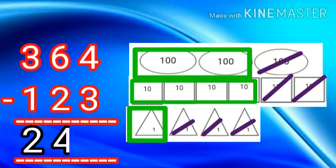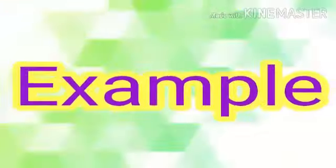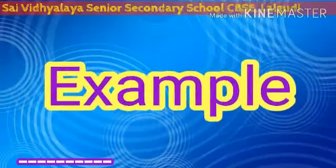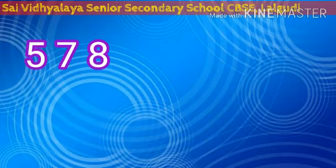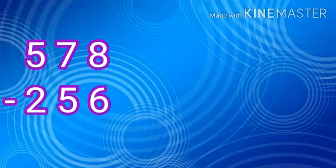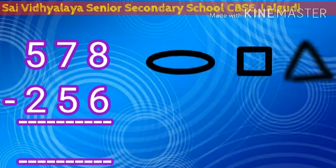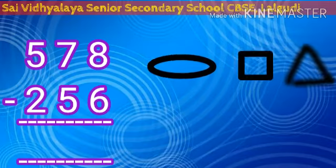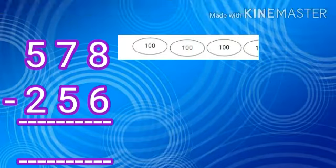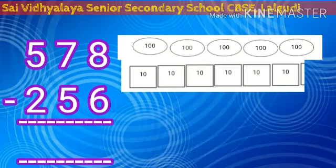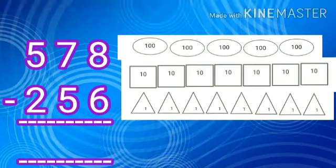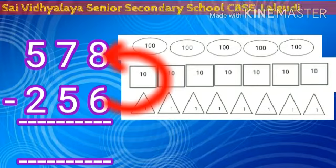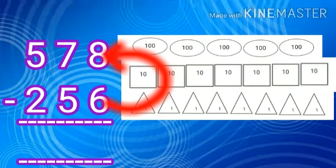Shall we see the next example? We will subtract 256 from 578, that is 578 minus 256. Now let's represent these numbers with cards: five hundred cards, seven ten cards, and eight one cards. Now we will remove 256 from 578.